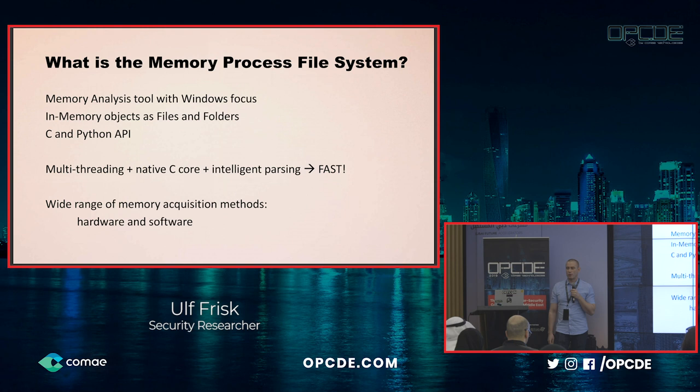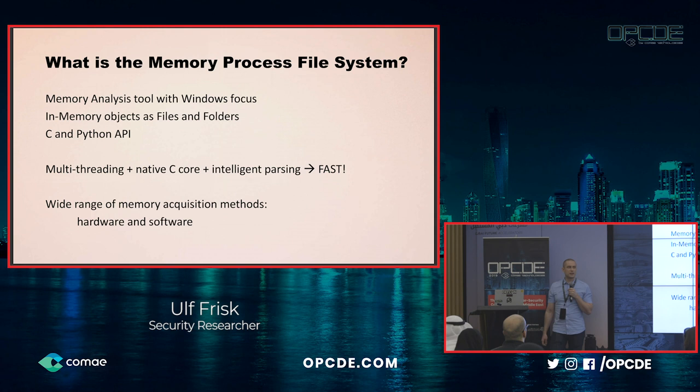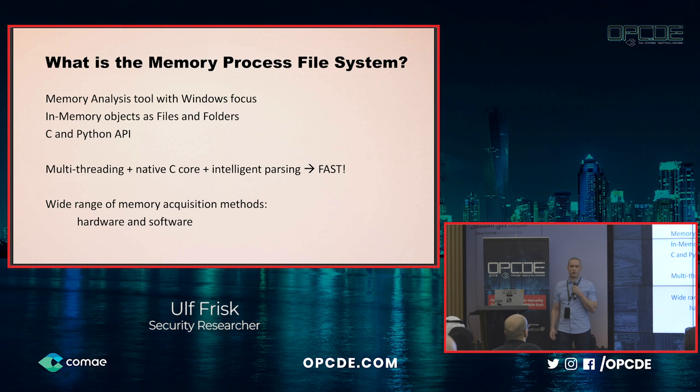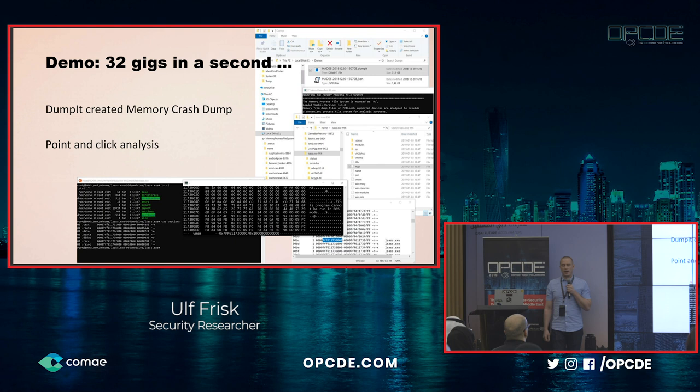Today we'll have a look at the Memory Process File System, which is a memory analysis tool with a strong Windows focus. It allows you to visualize in-memory objects as files and folders in a file system. It comes with a C and Python API, and with its multi-threaded core together with native C code and intelligent parsing, it's really fast. It also comes with a wide range of memory acquisition methods — not just hardware-based ones, but also software-based ones.